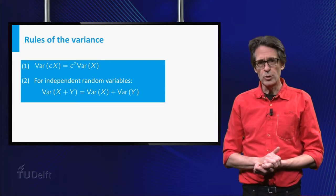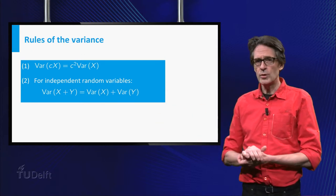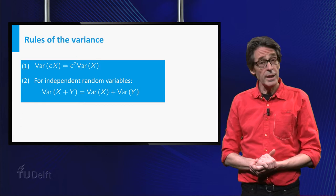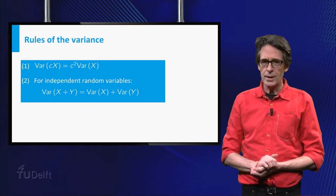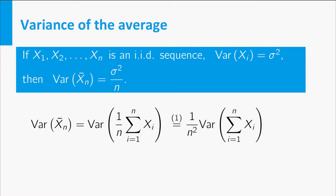For the variance we use the properties that you can see here. Note that for the sum rule the independence is important. We can then deduce that the variance of the average is equal to the individual variance divided by n. This follows easily from the two properties of the previous slide. The first rule first, the second rule next, and then just rewrite.